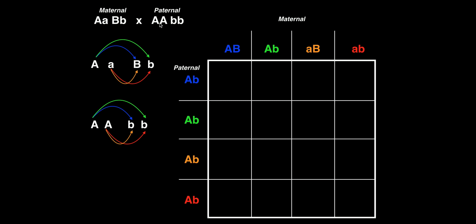Now for the father — his genotype is big A big A, little b little b. Remember, he's got two copies of every gene. We make the same combinations: in blue, big A with little b; in green, big A with little b. For orange and red we're actually going to get the same things — big A little b and big A little b. So all four of the father's sperm combinations are the same: big A little b. I've now set up the outline of my dihybrid cross and can determine all the possible genotypes.